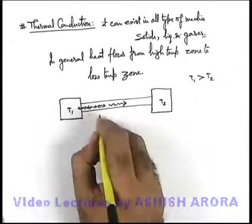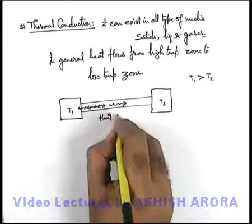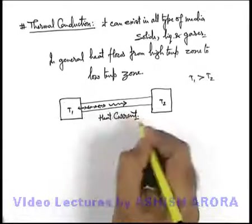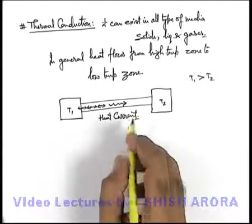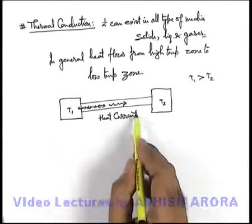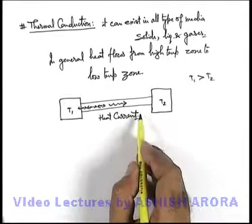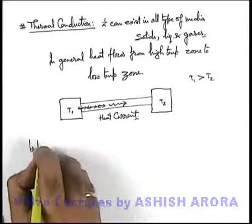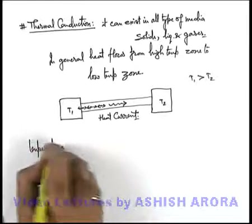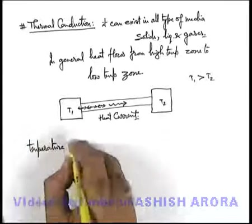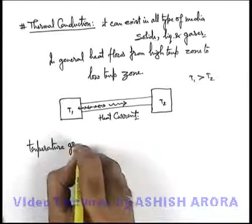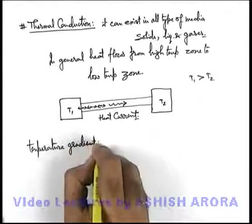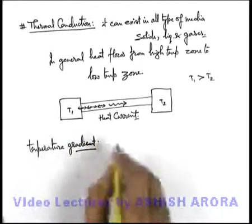This continuous flow of heat we call heat current. Now, one important parameter we need to understand is temperature gradient. Whenever thermal conduction takes place in a medium, a temperature gradient is always established.